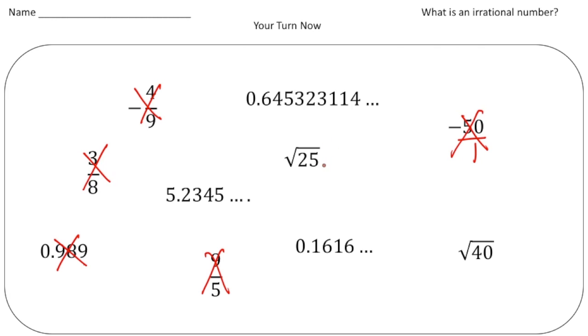The square root of 25 is 5, and we can write that as 5 over 1 which is a fraction which makes this rational. This one down here, 0.1616, well this repeats so because it's a decimal that repeats it's rational.